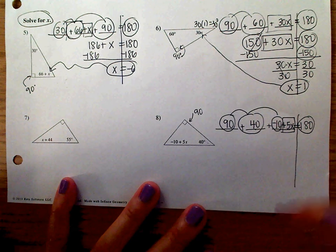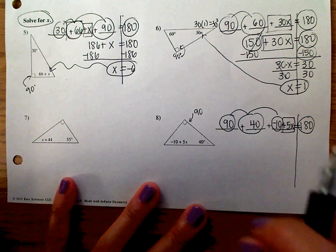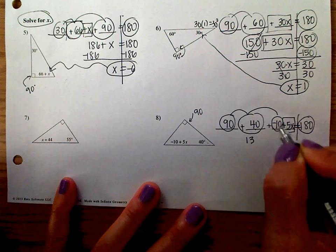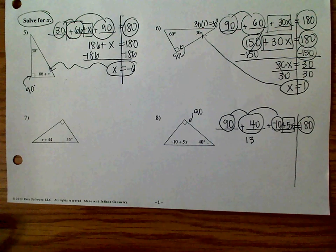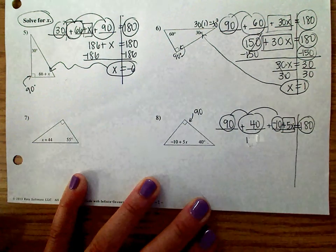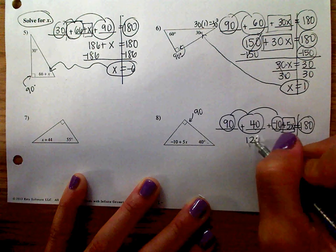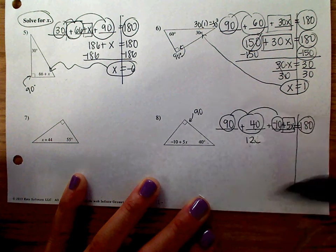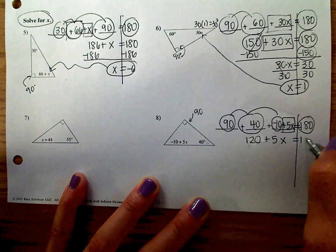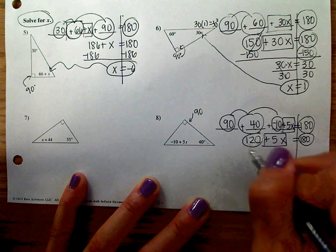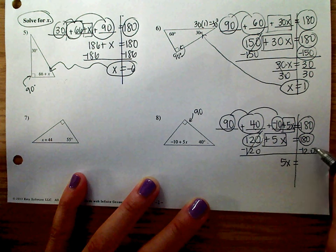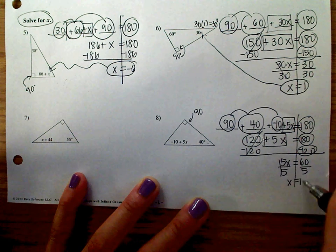Right here, you should pause the video and see if you can do this on your own. Because, from here, you should be able to do it. So, if you paused it, you would pause now. I'm just going to keep going. I just added those two. But, let me go ahead and subtract that. So, that will be 130 minus 10, which is 120. So, 120 plus 5x equals 180. Circle. Box. Circle. Subtract. 5x equals 180 minus 120 is 60. Divide. Divide. X is 12.